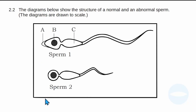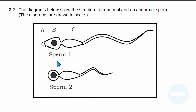Before I show the questions, I would like to analyze the diagram. The diagram below shows the structure of a normal and abnormal sperm. The diagrams are not drawn to scale. As you can see, we've got two sperms — one is normal and one is abnormal. This one is abnormal because it has a round head, whereas a normal sperm has an oval head. The normal sperm also has an acrosome, which is responsible for penetrating the egg during fertilization. So this one is abnormal, and this one is normal.